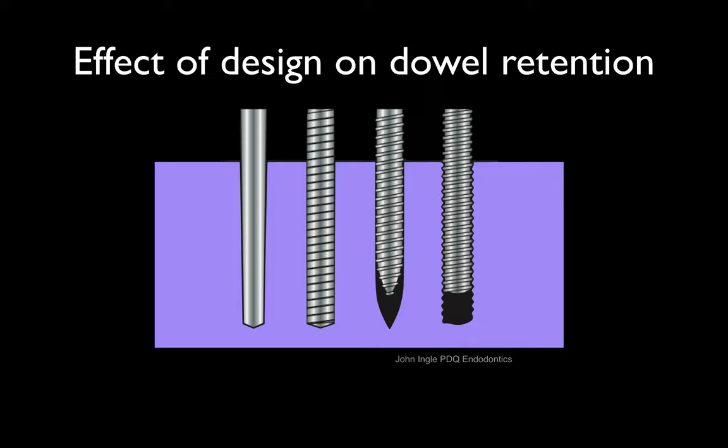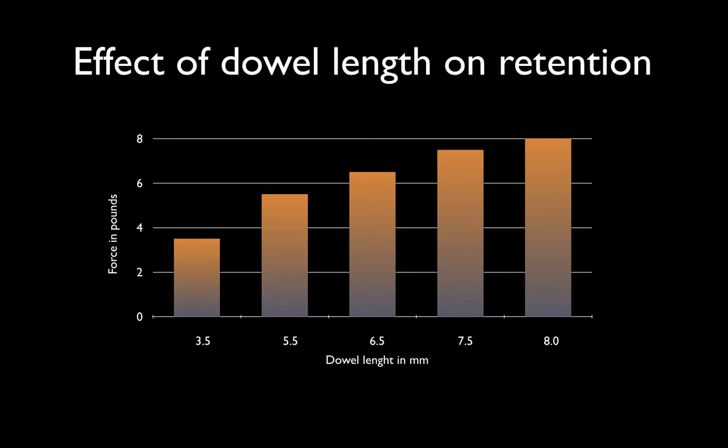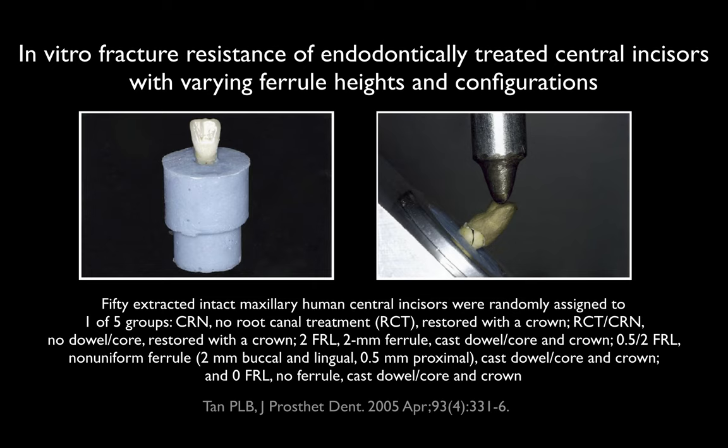We know that the design of the core and post will have a direct effect on retention. Parallel-sided posts with serrations are more retentive than smooth-sided parallel posts. Parallel posts, if they fit well within the canal, are least likely to cause fracture. Dowel length is more important for retention than the diameter of the dowel. And the ferrule is probably the most critical component of success.